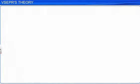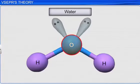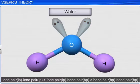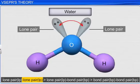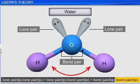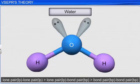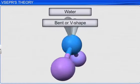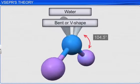In a water molecule, the central oxygen atom has two bonded pairs of electrons and two lone pairs of electrons. The repulsion between lone pair–lone pair and lone pair–bond pair is more than bond pair–bond pair. Thus, the two lone pairs on the central oxygen atom cause the molecule to distort from its regular geometry to a bent or V-shape, making a bond angle of 104.5 degrees.